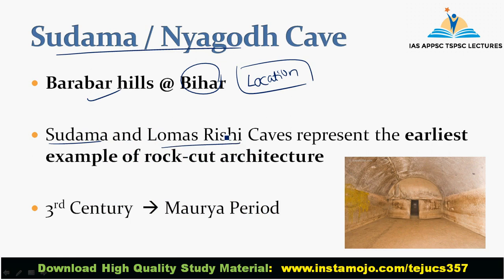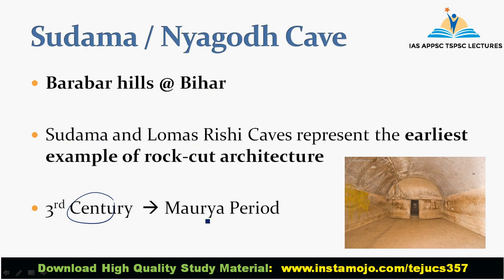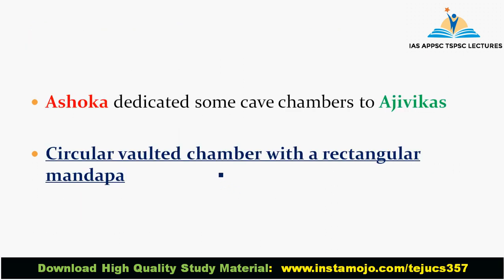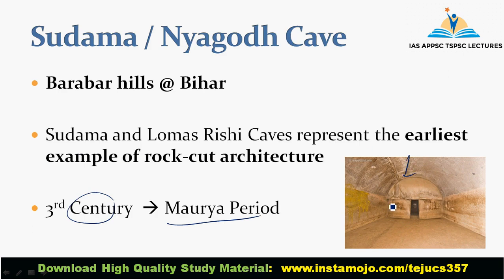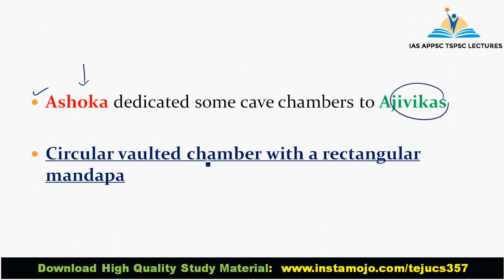Sudama and Romasarishi caves are the two earliest examples of rock-cut architecture. Key points: in the 3rd century BC, Ashoka dedicated some cave chambers to the Ajivika sect. A special architectural feature is a circular inner chamber with a rectangular mandapa. This is an important feature of the Sudama Cave.